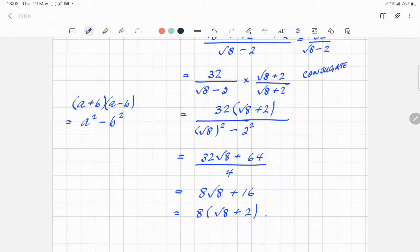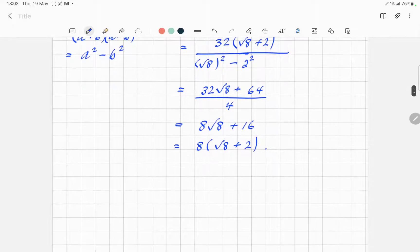And what's the last bit you want to do here? So the root 8 can be turned into 2 root 2. So there's an extra bit of factorization. 2 root 2 plus 2. So that 2 can come out. 16 root 2 plus 1.